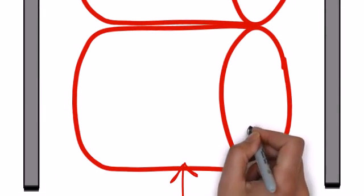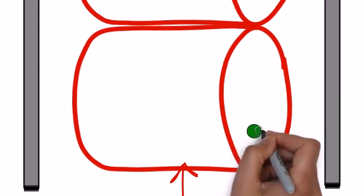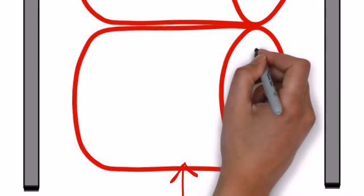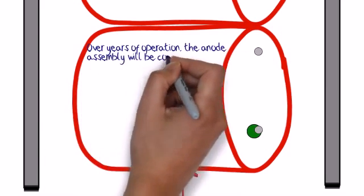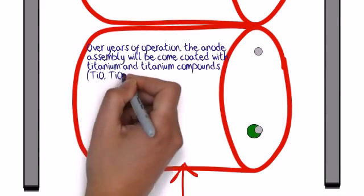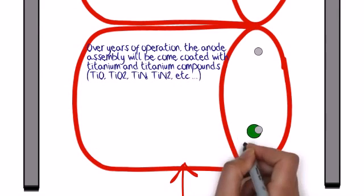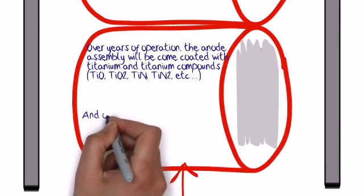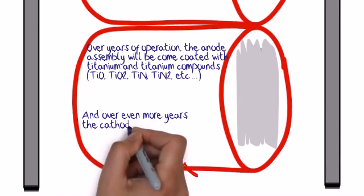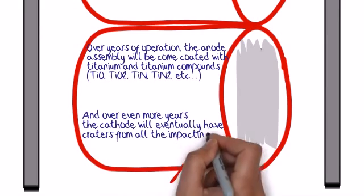And over time, enough molecules are going to sputter onto that titanium that you will actually have a buildup of those titanium compounds and titanium directly all over the walls of those anode tubes. And over the years, that cathode will eventually have craters form from all the impacting ions.